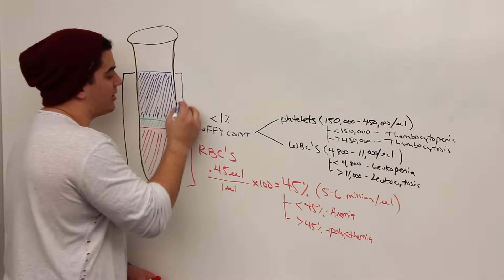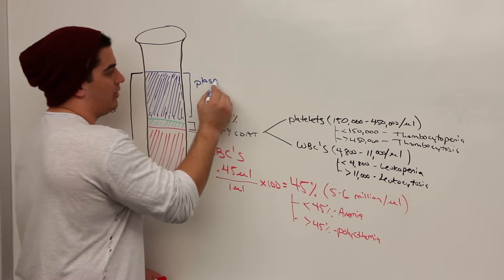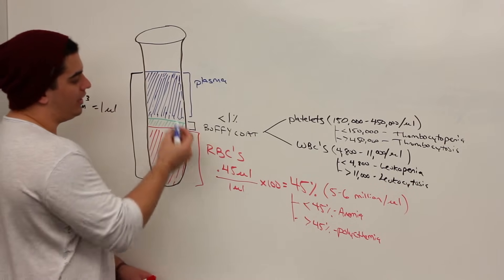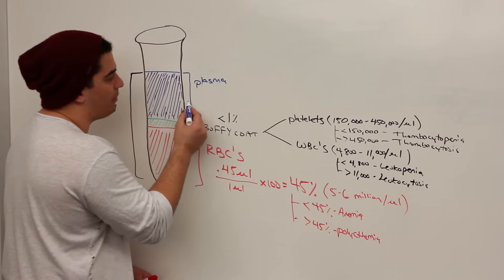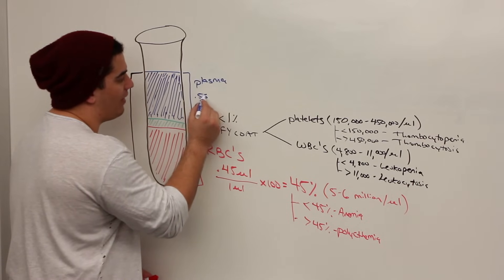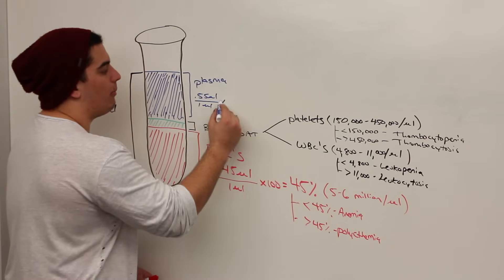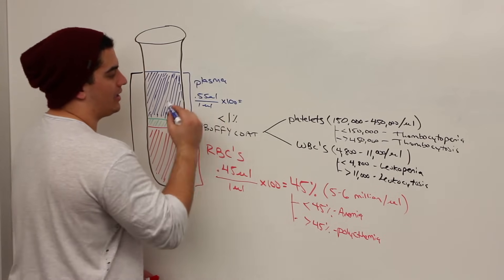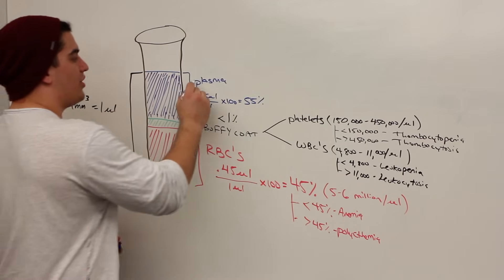Alright, now for this last layer here. This last layer is actually going to be called our plasma layer. And again, just like we did with the red blood cell layer, it's accounting for about 55%. So if we take it's about 0.55 microliters over one whole microliter of total blood, multiplied by 100, and that's going to give us approximately about 55%.